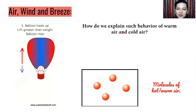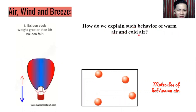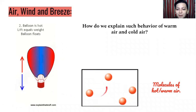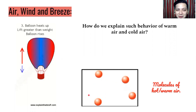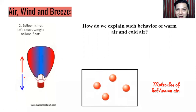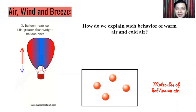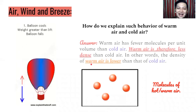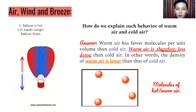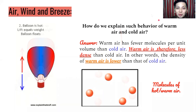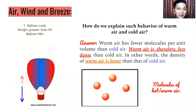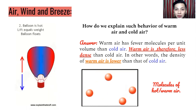How do we explain such behavior of warm air and cold air? We have here an example of a hot air balloon and molecules of hot or warm air. The answer is: warm air has fewer molecules per unit volume than cold air. Warm air is therefore less dense than cold air. In other words, the density of warm air is lower than that of cold air. That is why the hot air balloon goes upward — the air molecules inside the balloon become lighter.